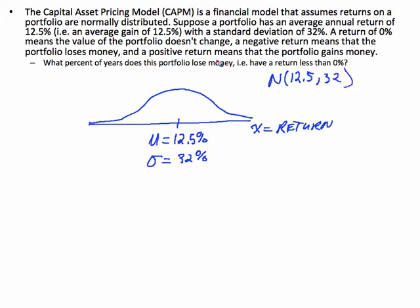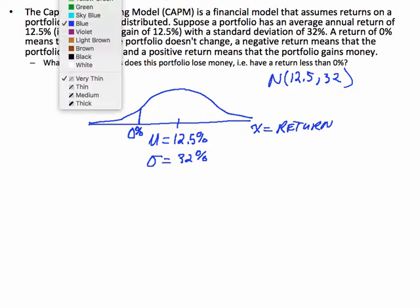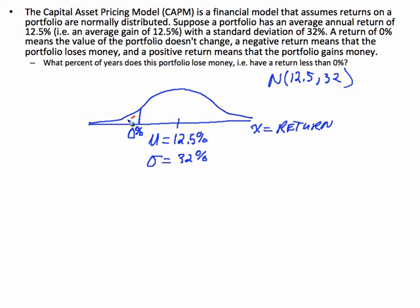So they want to know what percent of the years the portfolio loses money. In other words, the return is less than 0%. So that means we're going to mark 0% on our return axis, and what we're looking for is the percentage of times that we get a negative value. So a negative return would be any return that is less than 0, so it would be this shaded region right here. We want to know that shaded region or proportion or probability of a return being negative.